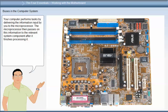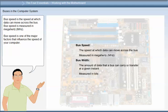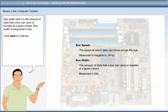Your computer performs tasks by delivering the information input by you to the microprocessor. The microprocessor then passes on this information to the relevant system component after processing it. This information travels inside your computer by means of buses — wires located on the motherboard that enable data transmission. Bus speed is the speed at which data can move across the bus, measured in megahertz. Bus width refers to the amount of data that a bus can carry or transfer at a given instant, measured in bits.